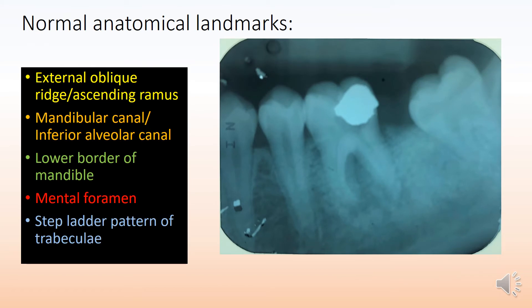The normal anatomical landmarks you would generally see in a mandibular molar region include the external oblique ridge, also called the ascending ramus, pointed out by the yellow line, followed by the mandibular canal, also called the inferior alveolar canal, with its location pointed out by the orange line.